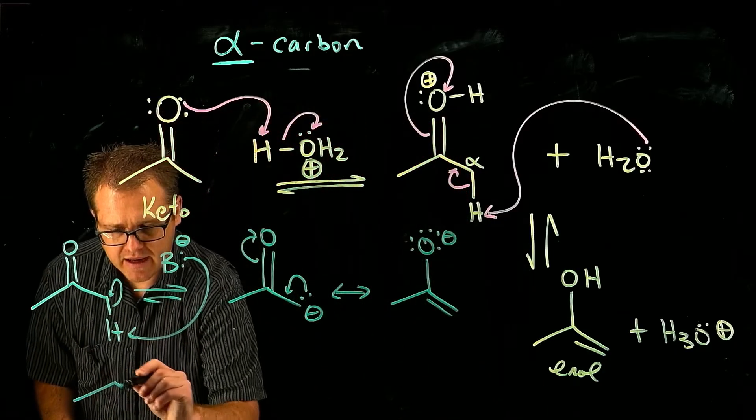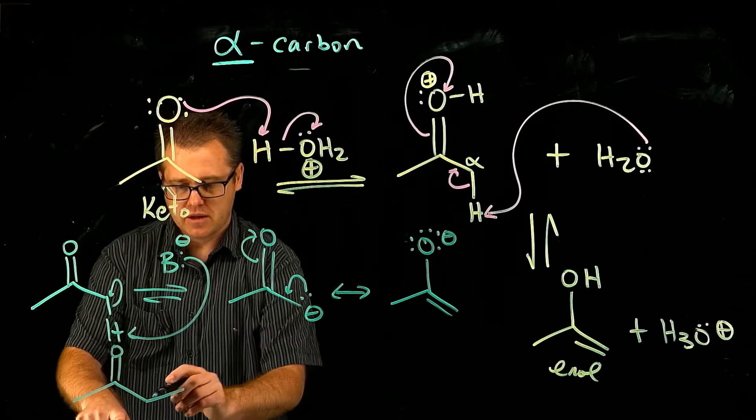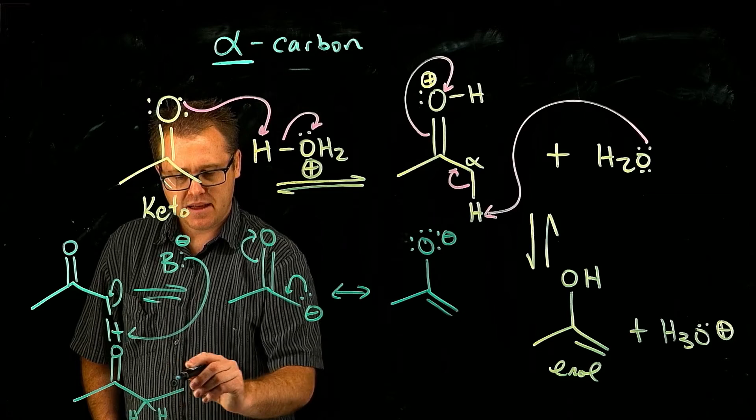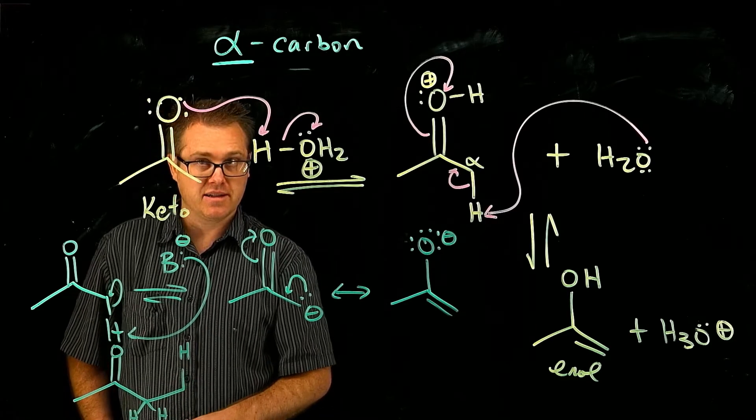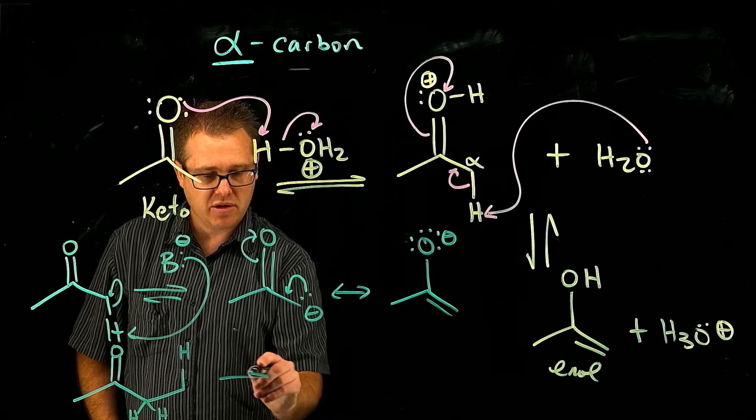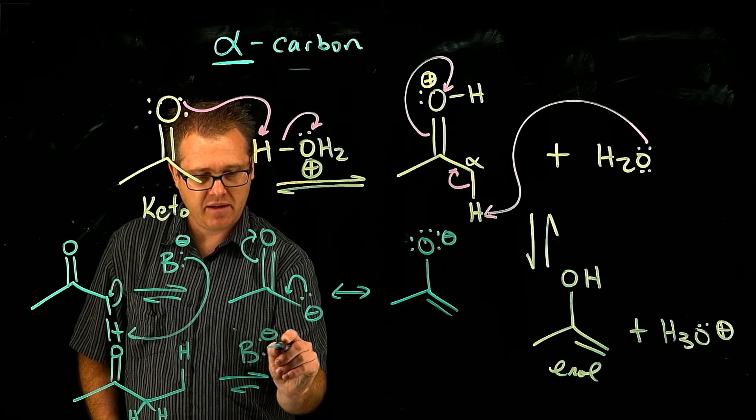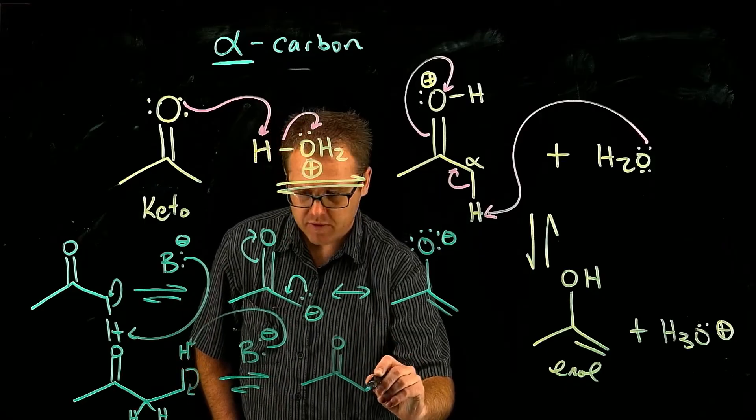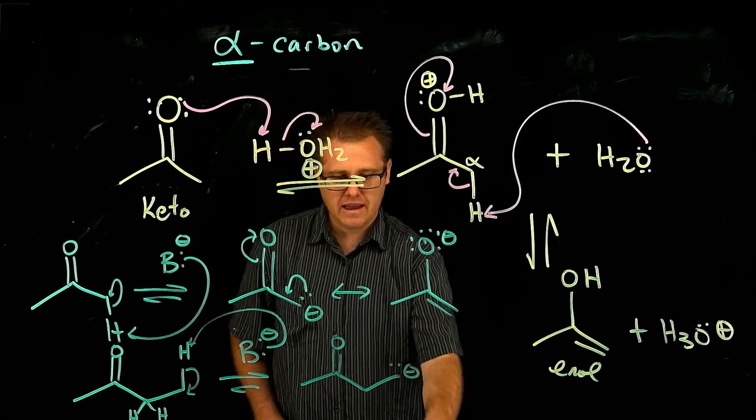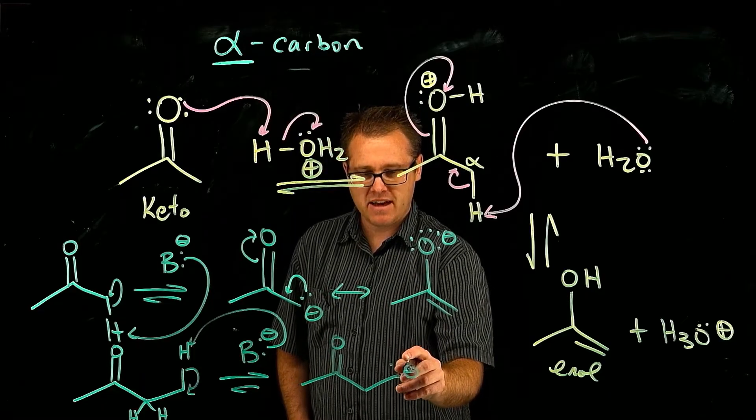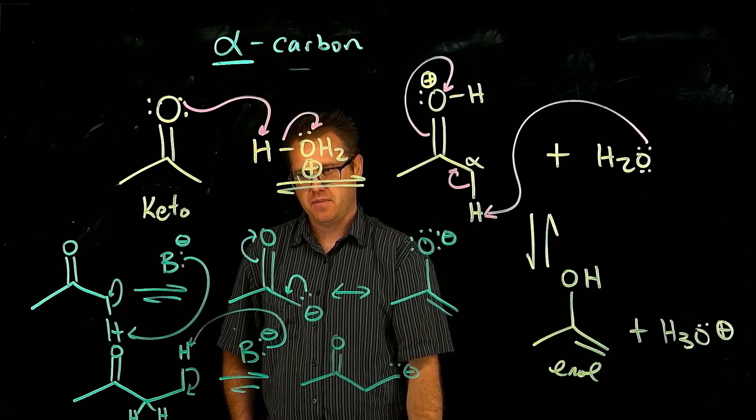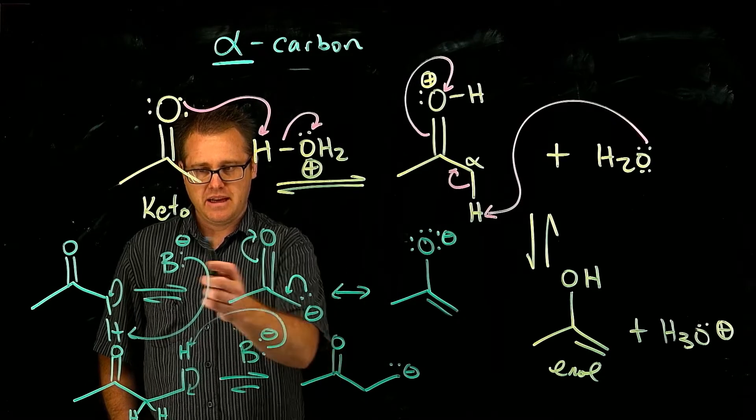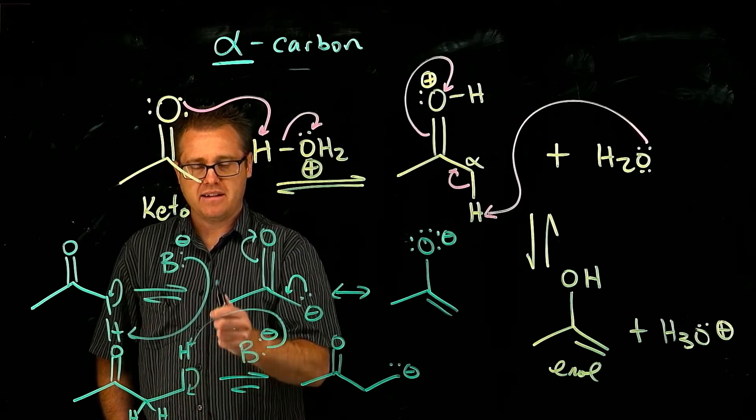What if I expanded this guy out to look like this? Okay. So here we have two alpha protons right there. But why is the beta hydrogen not acidic? Well, let's just do our same analysis. If we have a base coming in and abstracting that proton, is that anion right there, is that resonant stabilized? No, it's not resonant stabilized. So when we look at a ketone or an aldehyde, it is the alpha protons only that are acidic.